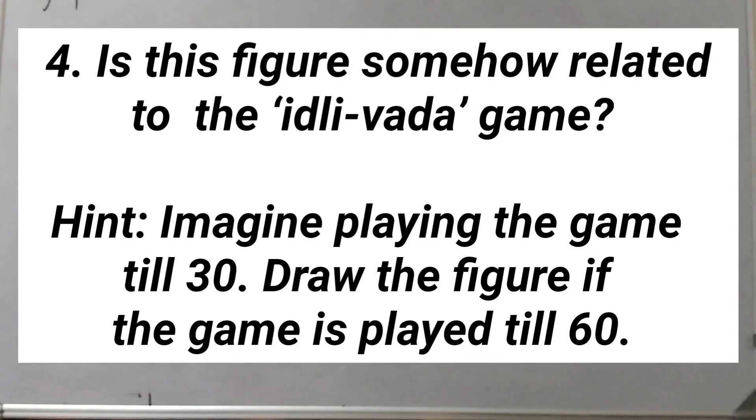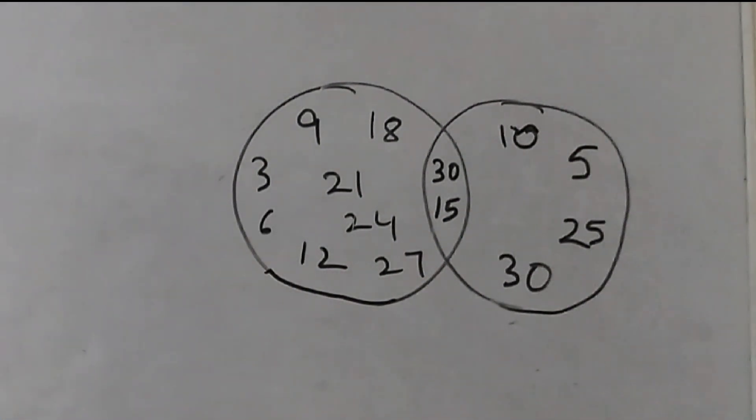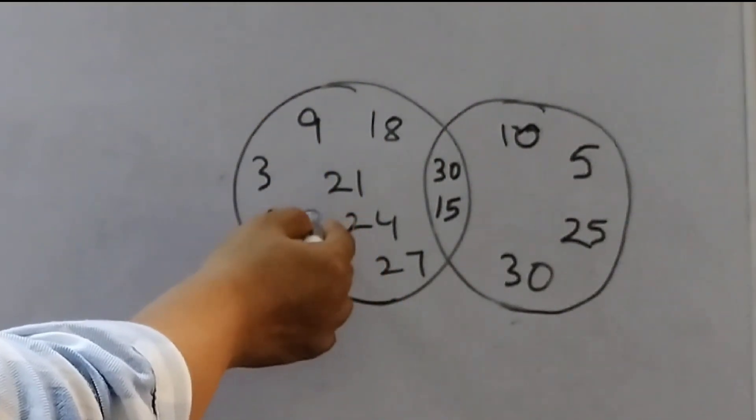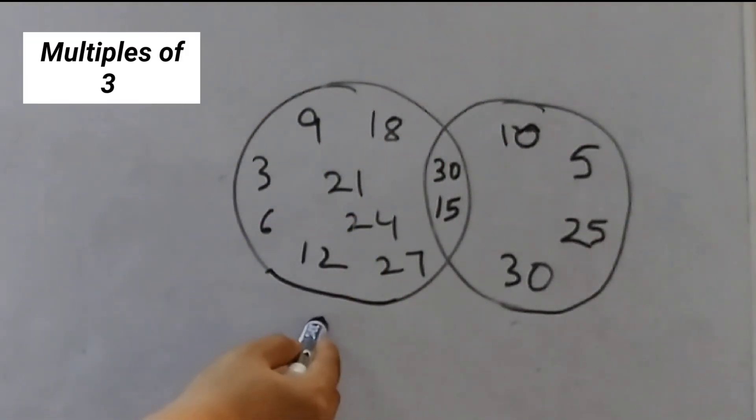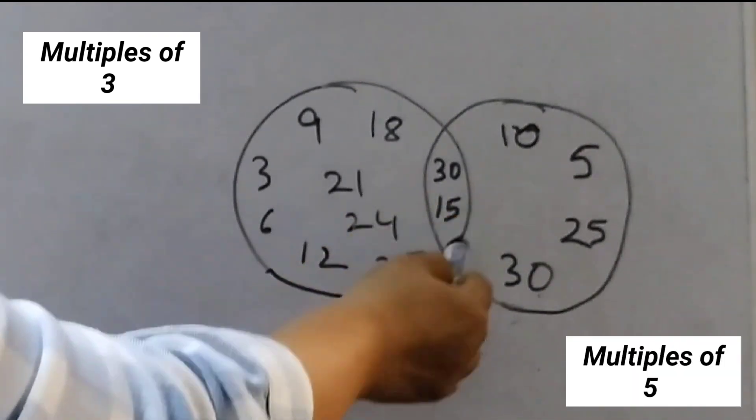Is this figure somehow related to the Idli Vada game? Imagine playing the game till 30, and this is the figure given. So yes, we can say this figure is related to the Idli Vada game, because here if you see this circle, these are the multiples of 3, and these are the multiples of 5. These are the common multiples.